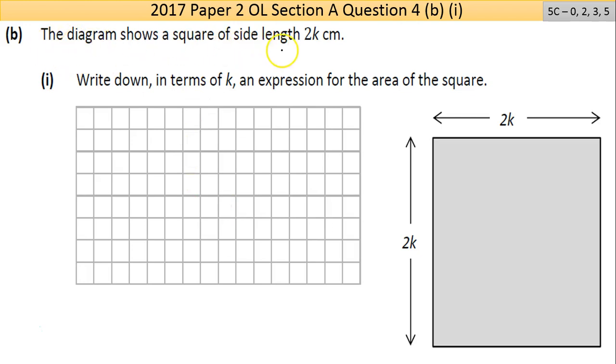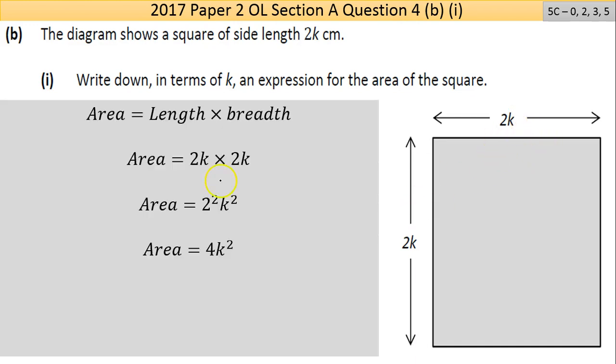Part B: the diagram shows a square of side length 2k. Part (i) says write down, in terms of k, an expression for the area of the square. The area of a square or rectangle is length by breadth. Your area here is 2k times 2k. 2 by 2 is 4, k by k is k squared, so your answer is 4k².